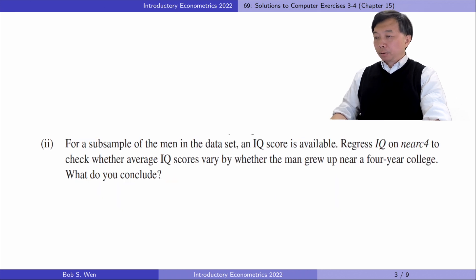In part two, for a subsample of the men in the dataset, an IQ score is available. Regress IQ on near C4 to check whether average IQ scores vary by whether the man grew up near a four-year college. What do you conclude?